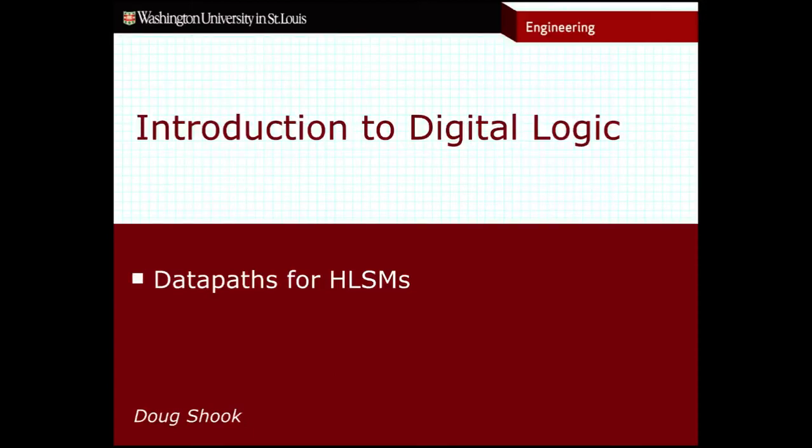So up until this point we've talked a lot about designing high-level state machines and how high-level state machines worked, what their differences are between the finite state machines that we've seen in earlier sections of this course. Now we're going to shift and talk about how do we implement these high-level state machines. I've already tried to get you to think about this a little bit, but we're gonna dig into it in a lot more detail now for the remaining section of this course.